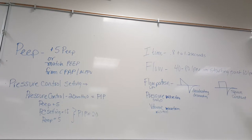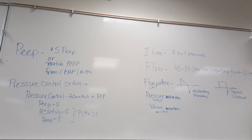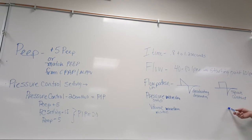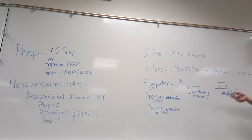This is where you'll need to start going around and inputting settings on each of your vents to get to know them better. To summarize: volume control defaults to square; pressure control defaults to decelerating. The Draeger and the Servo won't let you change the flow pattern in volume control, so it stays square. In pressure control, you can't set it — it's always decelerating.